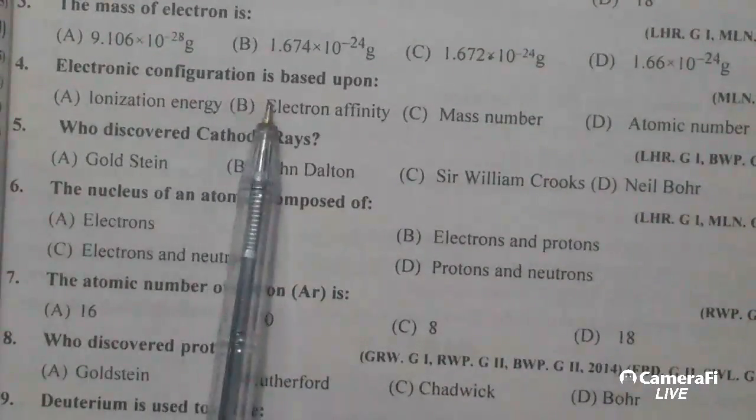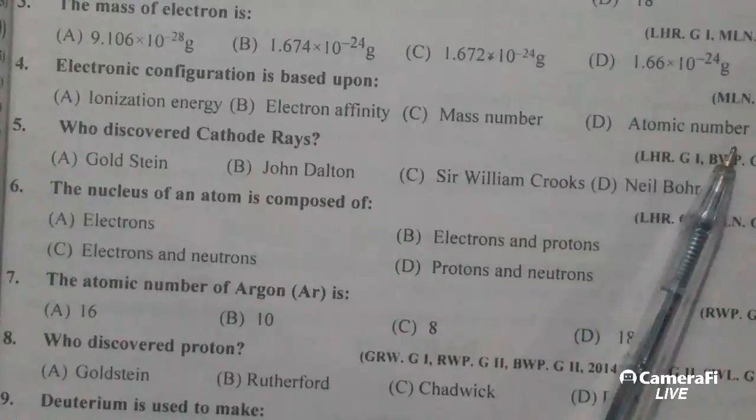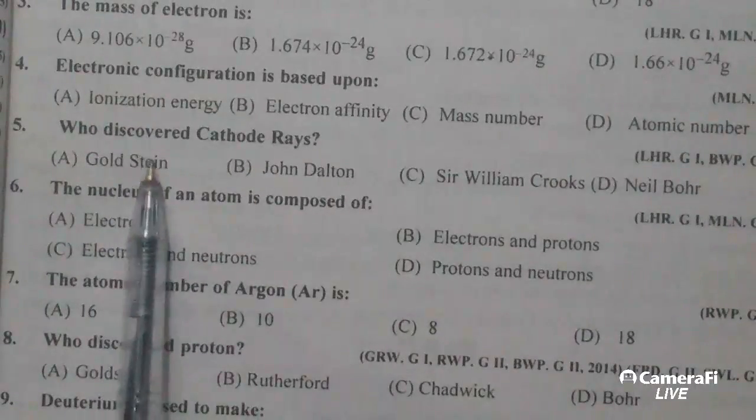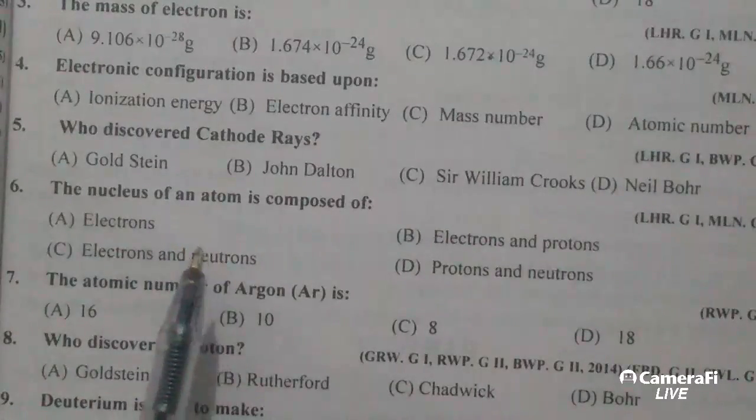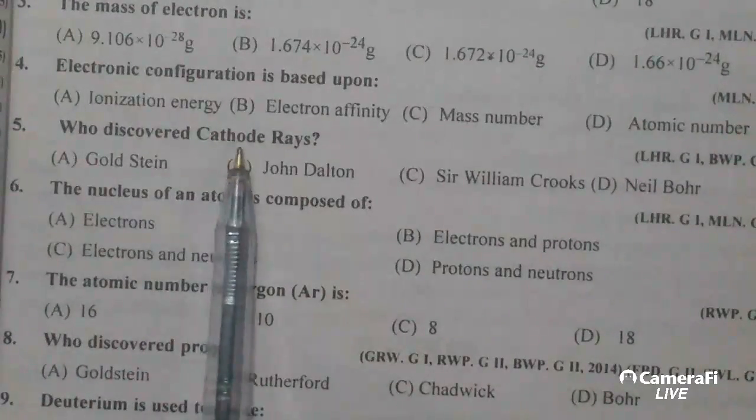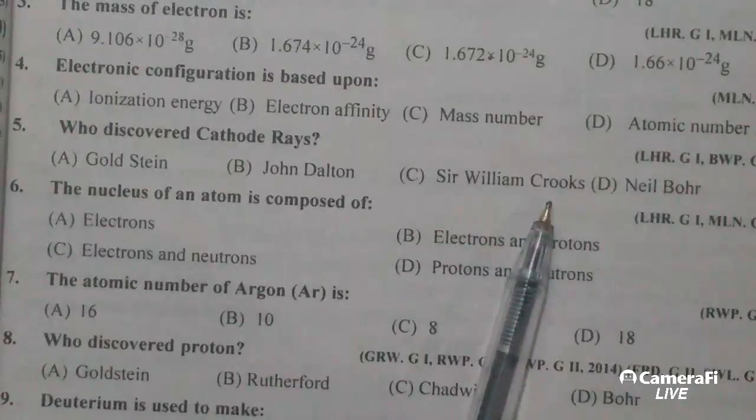The electronic configuration is based upon atomic number. Who discovered cathode rays? Sir William Crookes.